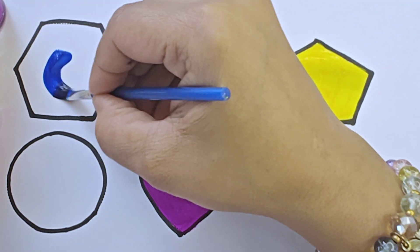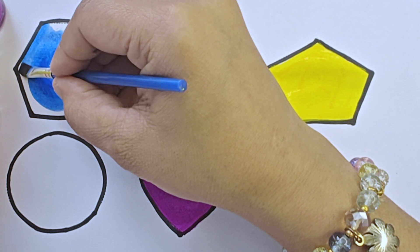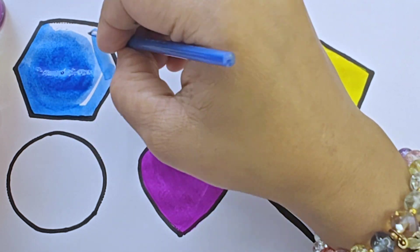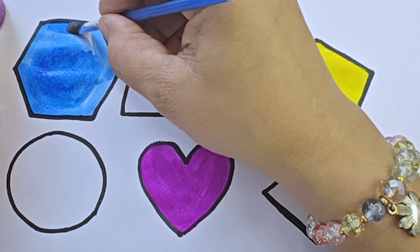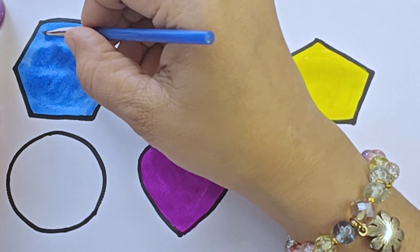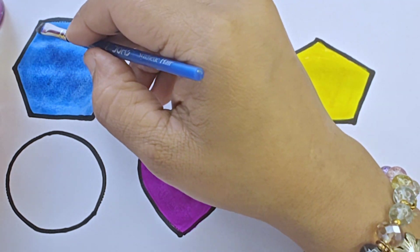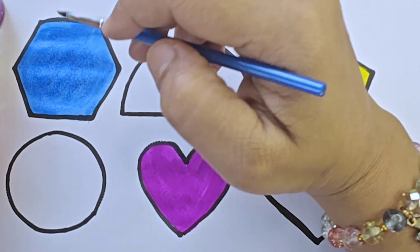It is blue color. It is hexagon. It has six sides. One, two, three, four, five, six. Six sides.